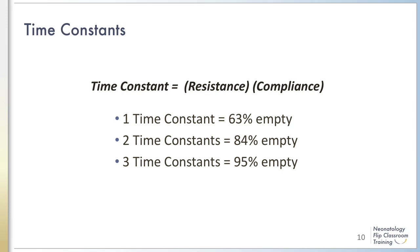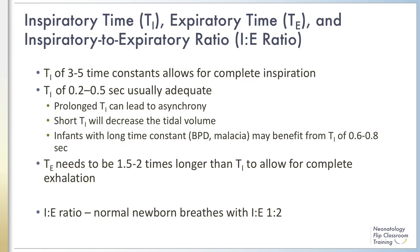Providing adequate expiratory time when on a ventilator can prevent breath stacking, air trapping, and overdistension. An inspiratory time of 3 to 5 time constants will allow for complete inspiration. For infants with normal lung compliance, a time constant of 0.09 seconds is average, and an inspiratory time of 0.2 to 0.5 seconds is usually adequate for full lung filling. Making the inspiratory time too long can lead to significant ventilator-patient asynchrony, while making it too short can decrease tidal volume, leading to hypercarbia and poor ventilation. Infants with longer time constants, such as severe BPD, may benefit from longer inspiratory times of 0.6 to 0.8 seconds.